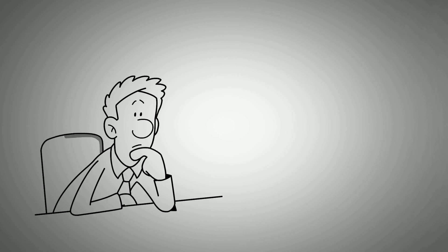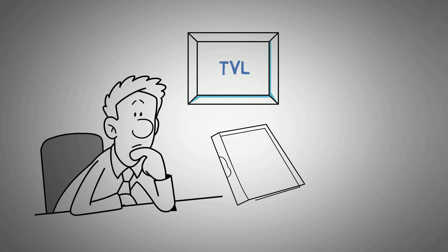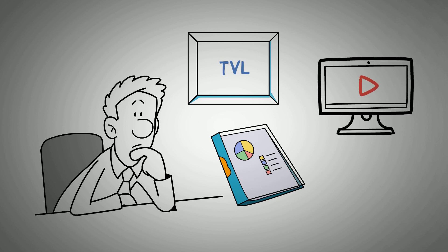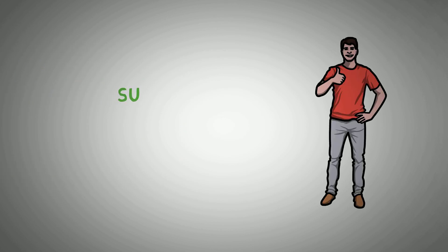Wrapping up this video, we have discussed total value locked, why it matters, how to calculate it, and its downsides. Total value locked is undoubtedly a critical concept in the crypto space, especially for DeFi platforms. There are analytics software and apps or platforms where you can check out the TVL of specific tokens before investing in them. Are you still sitting on the fence regarding what crypto project to stake your money in? Why don't you check out the TVL of crypto projects that have caught your interest? Thank you for watching until the end.